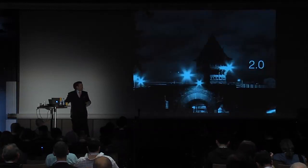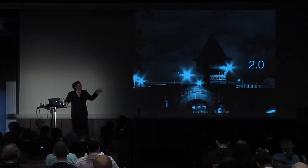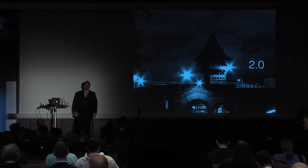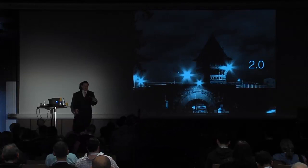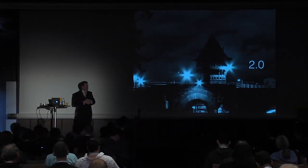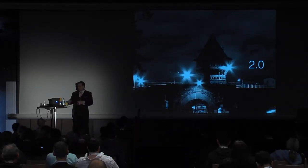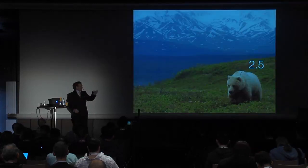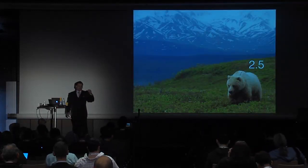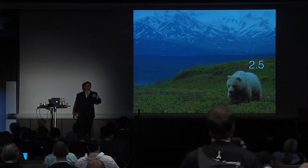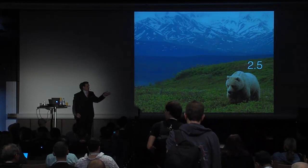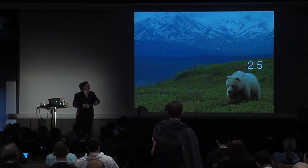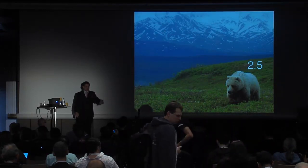In April of 2013, Piston released 2.0, which was based on Folsom. This was shortly before I joined the company in May, at which time they had already upgraded the Piston code to Grizzly, so that in August of that year Piston 2.5 could come out. At that point we were actually current with what was released upstream. Grizzly had come out in April when Piston 2.0 had come out, and then 2.5 followed and brought us up to speed.